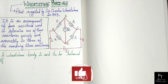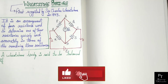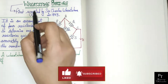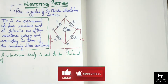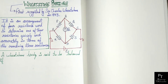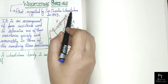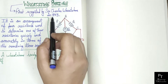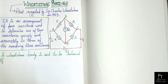Hello everyone, welcome to Physics Tutorials. Today's topic is Wheatstone Bridge. It is one of the accurate arrangements for measuring an unknown resistance. British physicist Sir Charles Wheatstone suggested this method in 1843, which is why this method is called Wheatstone Bridge. So let's start with today's topic: Wheatstone Bridge.